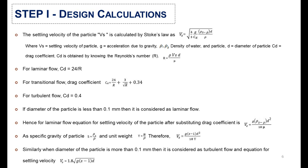Cd is obtained by knowing the Reynolds number. For laminar flow, Cd is 24/R, while for transition flow the drag coefficient is calculated by a separate equation. For turbulent flow, drag coefficient is 0.4. If the diameter of the particle is less than 0.1 mm, it is considered laminar flow.